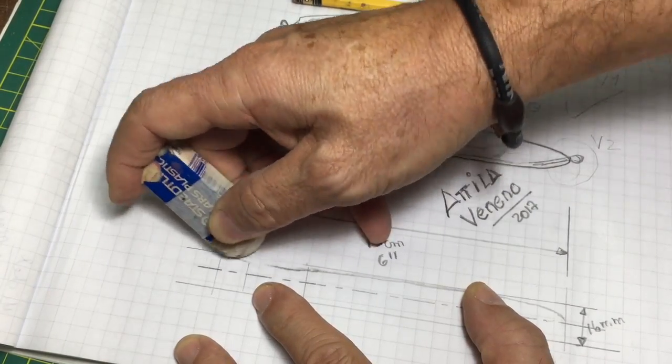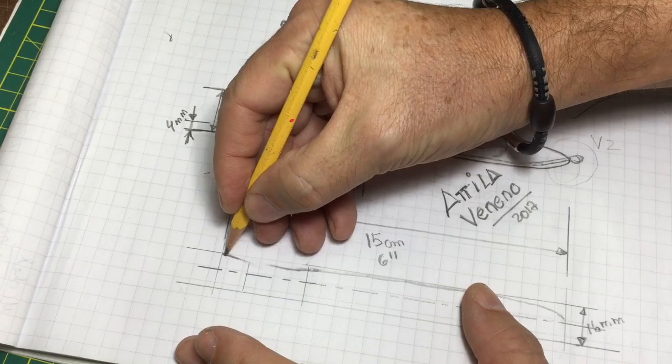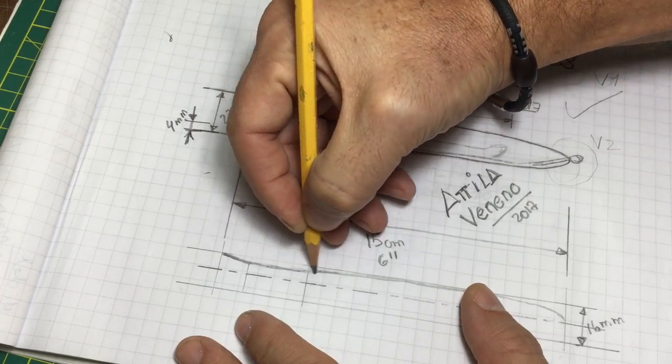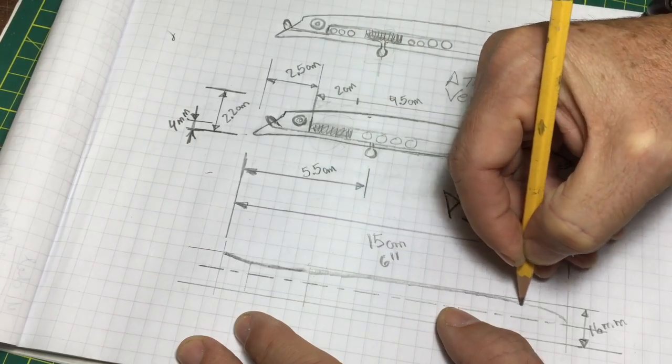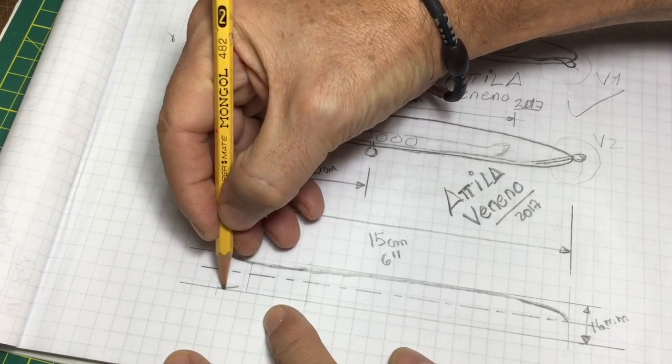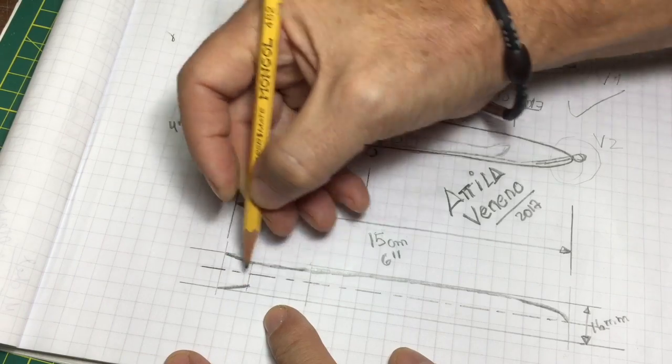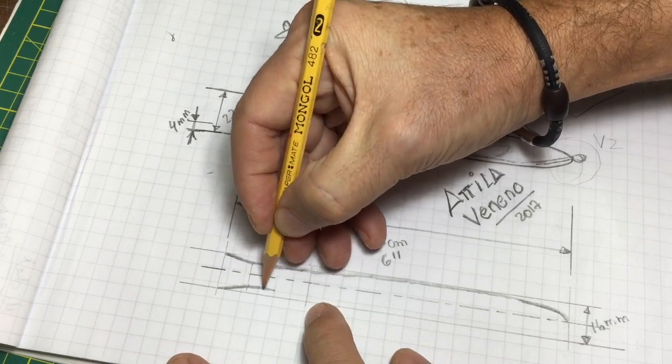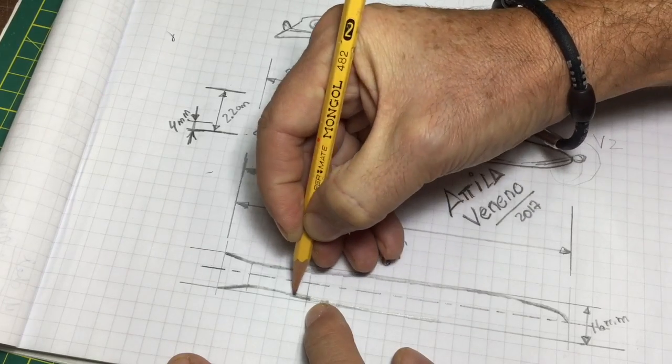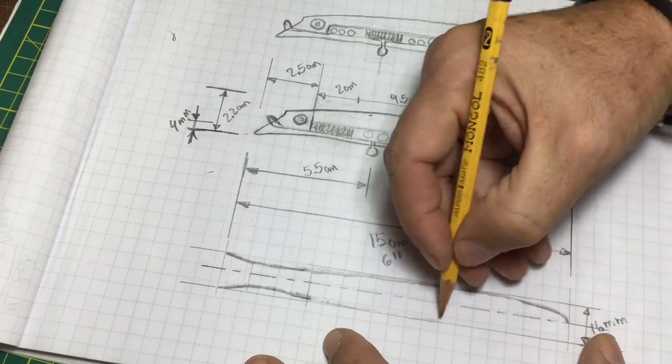The Attila Veneno is a darter lure. I plan to use it to catch Corvinas at night. And this kind of lure I've never used before, but I'm convinced that they are very effective.